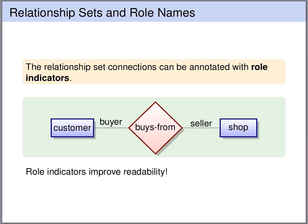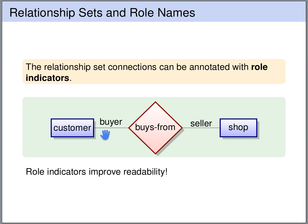To improve readability, we can annotate the connections between the relationship set and the participating entity sets with role indicators. In this example, we have an entity set customer and an entity set shop related by a buys-from relationship set. We can annotate the connection to the customer with the role buyer and the connection to the shop with the role seller.